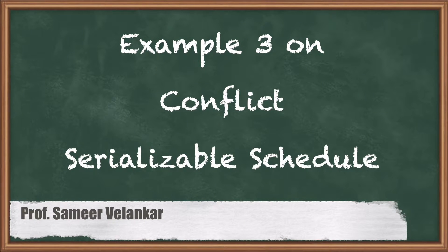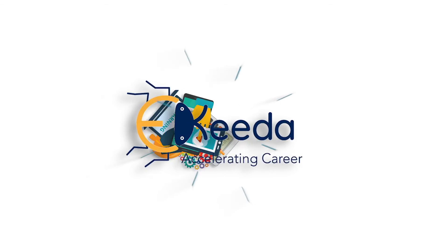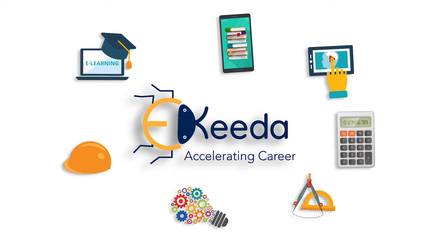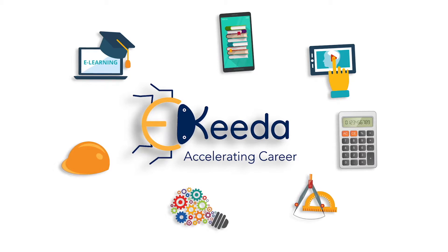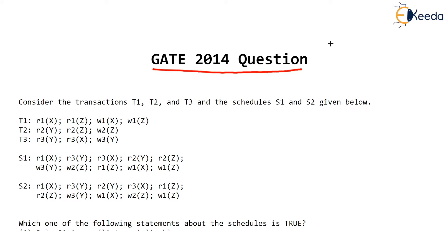Hello dear students. Let's see the GATE 2014 question on conflict serializability. We are given three transactions T1, T2, and T3. The concurrent schedule contains these three transactions, and we are given two schedules S1 and S2 which contain these three transactions.